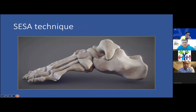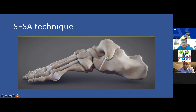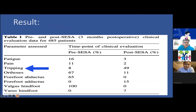Regarding technique: after reducing the talo-calcaneal derotation by everting the foot, an incision is made at the sinus tarsi and a screw is placed in a superior-to-inferior direction. The screw head lies against the lateral process of the talus, blocking the talo-calcaneal joint from going into eversion, thus maintaining the calcaneum and talus in a neutral position.